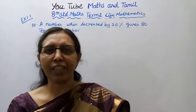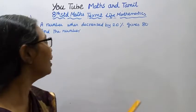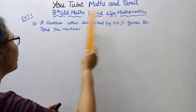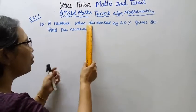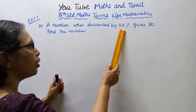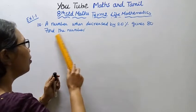Hello students, welcome to Maths and Tamil channel. This is problem 10 from Maths term 2, life mathematics exercise 1.1. A number when decreased by 20% gives 80. Find the number.